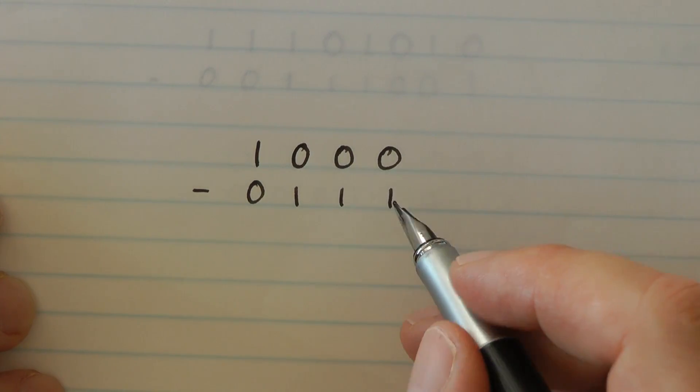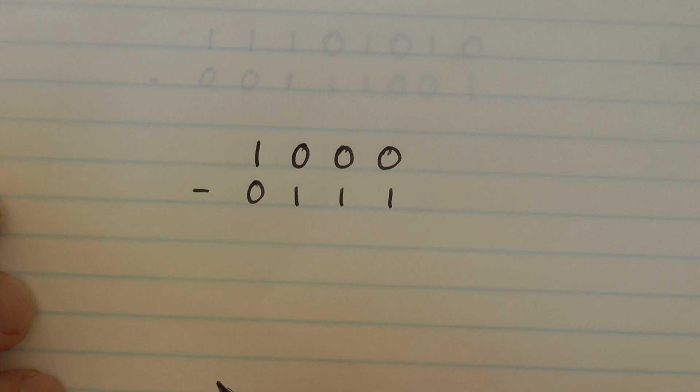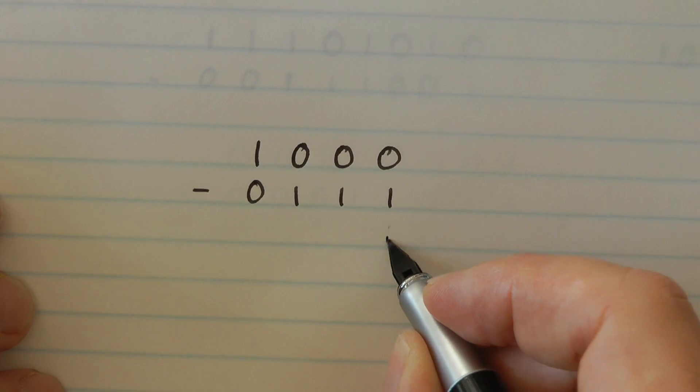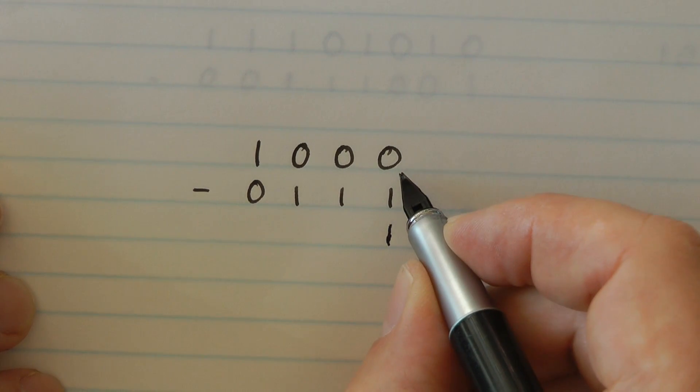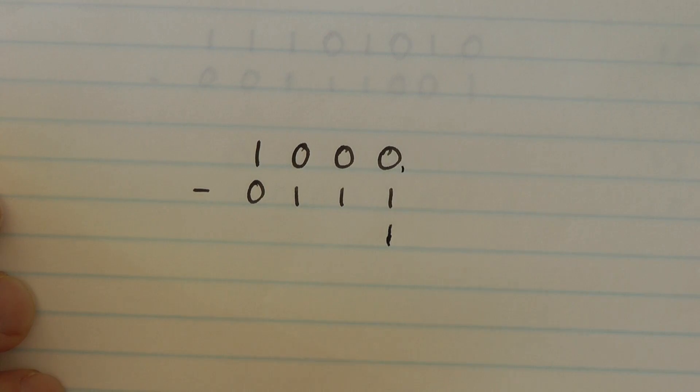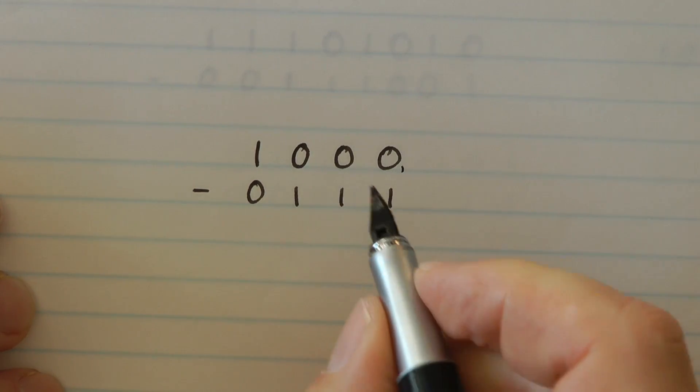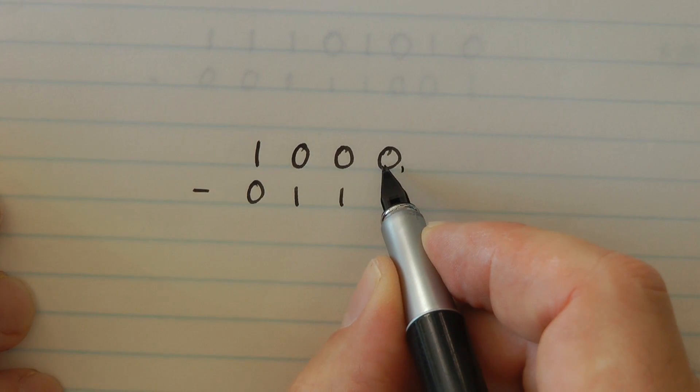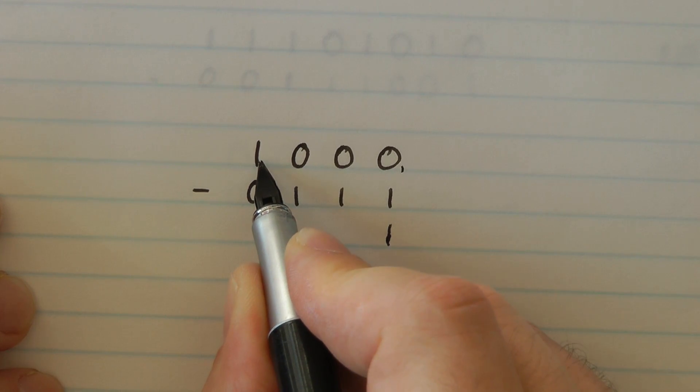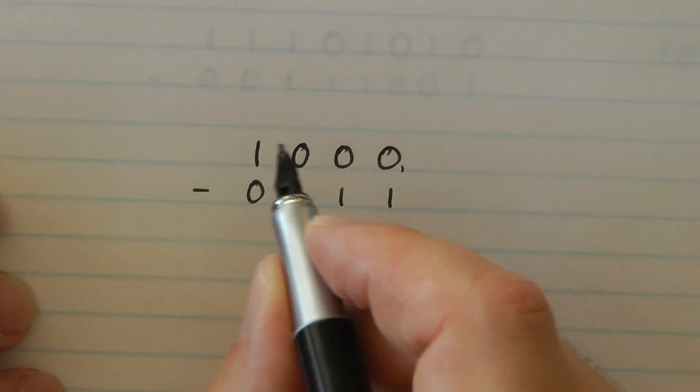And right from the start we've got a 0 minus a 1 and the rule says 1 and a borrow. Now I haven't got anything I can borrow against so what I need to do is to cascade my borrows all the way up until we find a 1 we can borrow against.